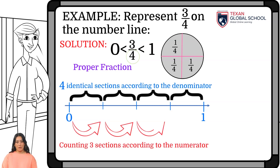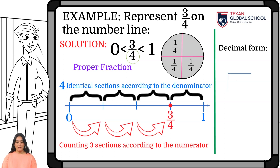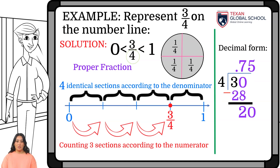And, since the numerator is 3, locate the fraction by hopping 3 times to the point where the fraction is found. Let us perform the division of 3 by 4, resulting 0.75, which is closer to 1.